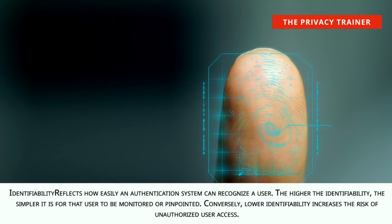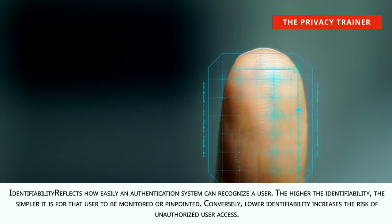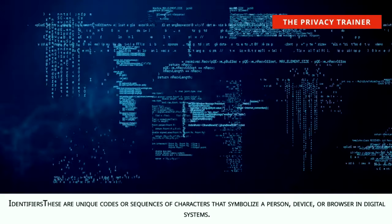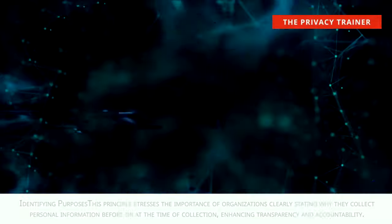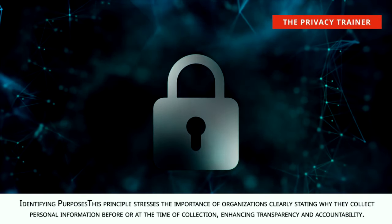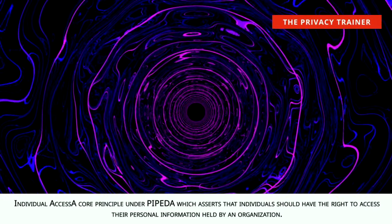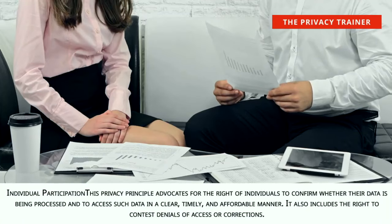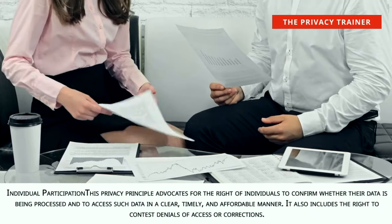Identifiability. Reflects how easily an authentication system can recognize a user. The higher the identifiability, the simpler it is for that user to be monitored or pinpointed. Conversely, lower identifiability increases the risk of unauthorized user access. Identifiers. Unique codes or sequences of characters that symbolize a person, device, or browser in digital systems. Identifying purposes. This principle stresses the importance of organizations clearly stating why they collect personal information before or at the time of collection, enhancing transparency and accountability. Individual access. A core principle under PIPEDA which asserts that individuals should have the right to access their personal information held by an organization.